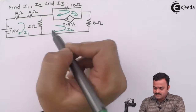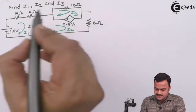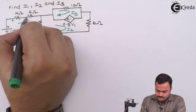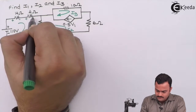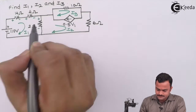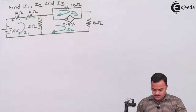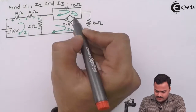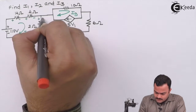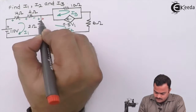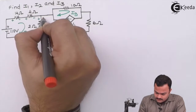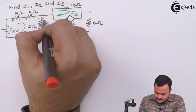We are having three meshes; i1, i2, i3 are the mesh currents, and we will mark the voltage drops accordingly. They have also given v1, which is the voltage across the 2-ohm resistor with the specified polarity, so let's encircle it.